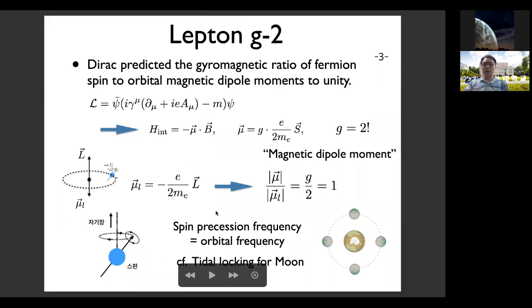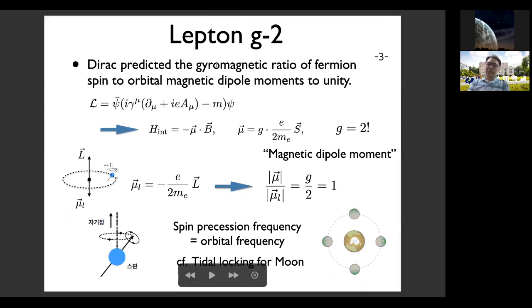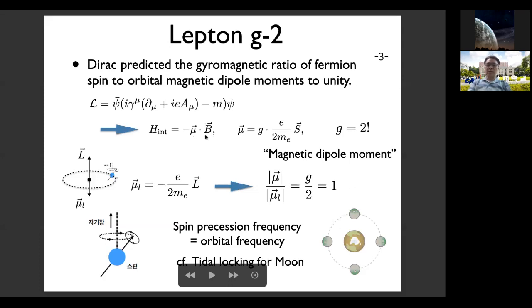Let me give a brief introduction to lepton g-2. Dirac predicted from his equation that the gyromagnetic ratio G is equal to two at tree level. Just from the interaction between the electron and the electromagnetic field, we can derive the effective interaction Hamiltonian in the presence of the magnetic field. The magnetic dipole moment is proportional to the spin of the electron, and this G factor here is equal to two at the tree level.